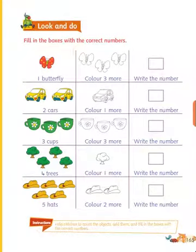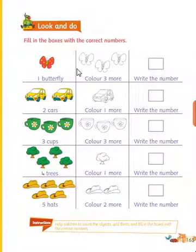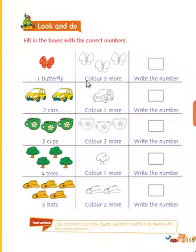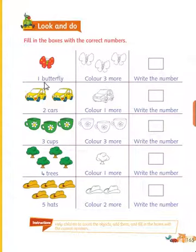See here the next activity. Here is one butterfly — this is the activity of filling the box with the correct numbers. You must fill the box. You see one butterfly and three more — how much will the answer be? One and three, how much will it be? Four. You must color this butterfly.